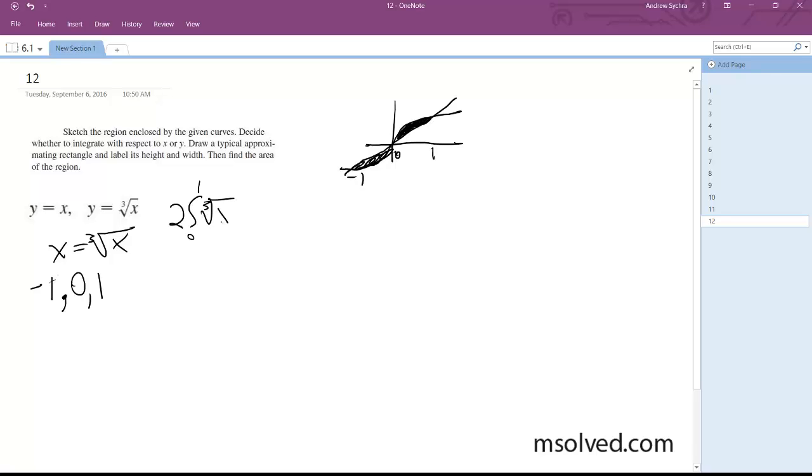So integral of cube root of x minus integral from 0 to 1 of x dx times 2. So what we end up with here is area is going to be equal to 2 times 3 fourths x raised to the 4 thirds from 0 to 1 minus 2 times x squared over 2 from 0 to 1.